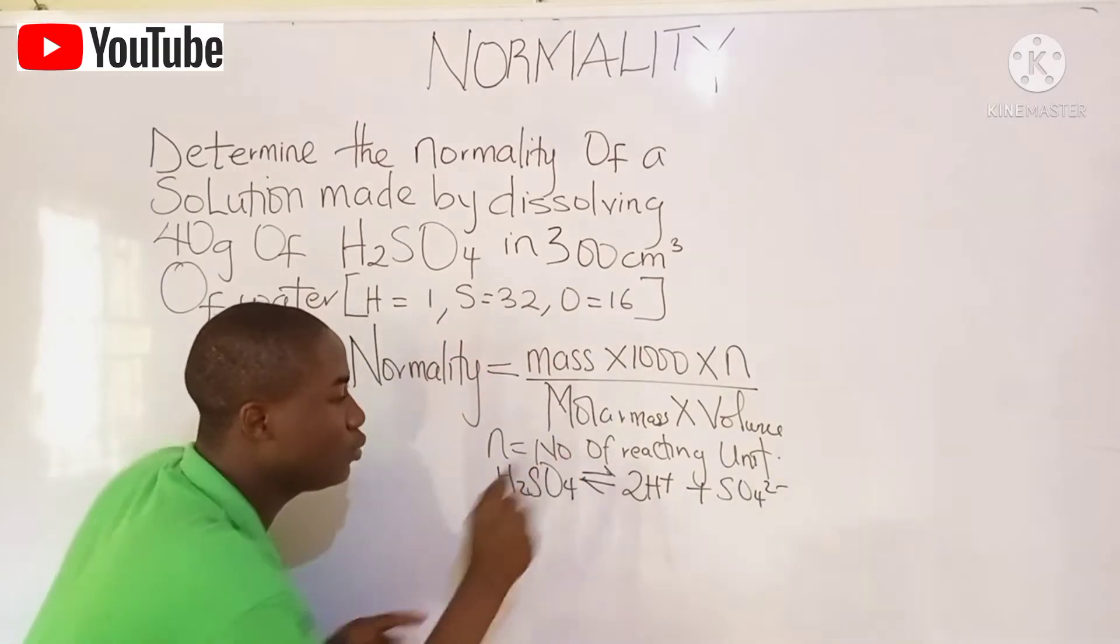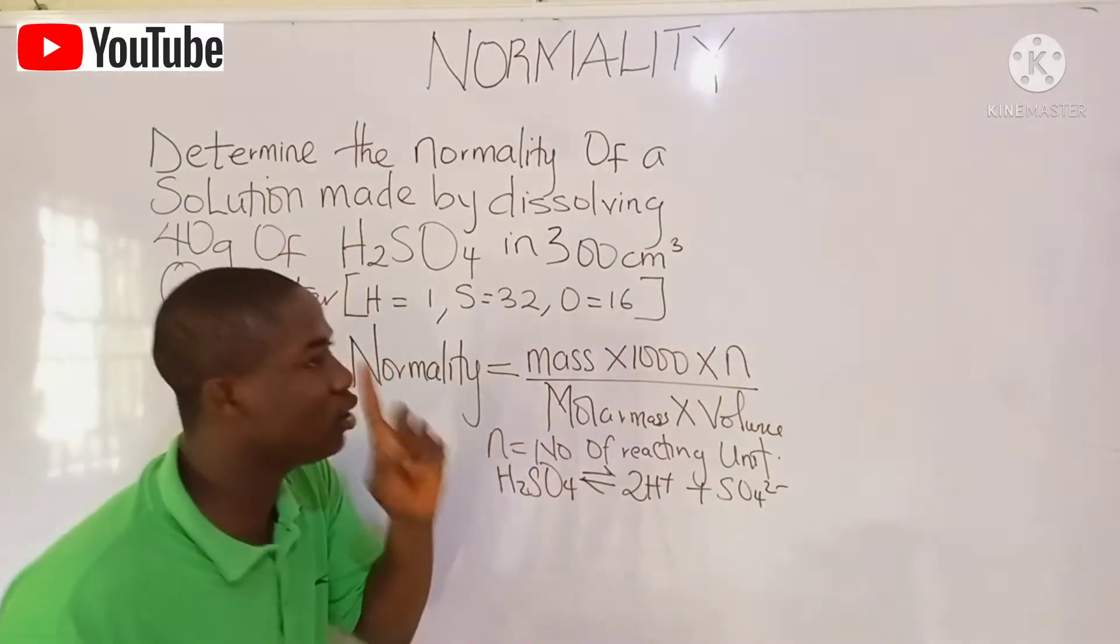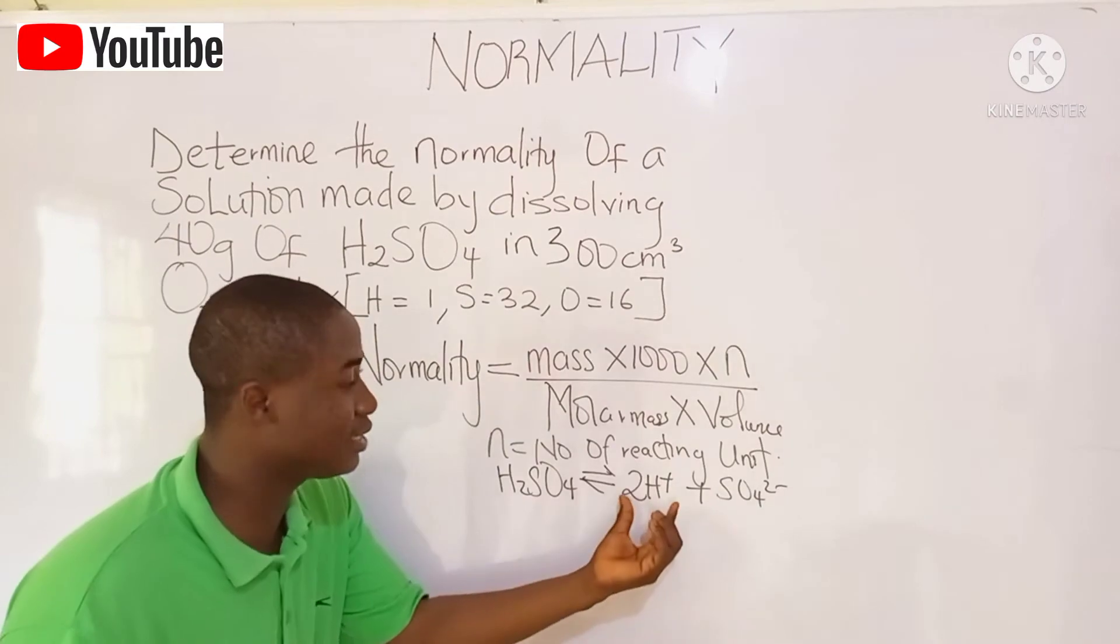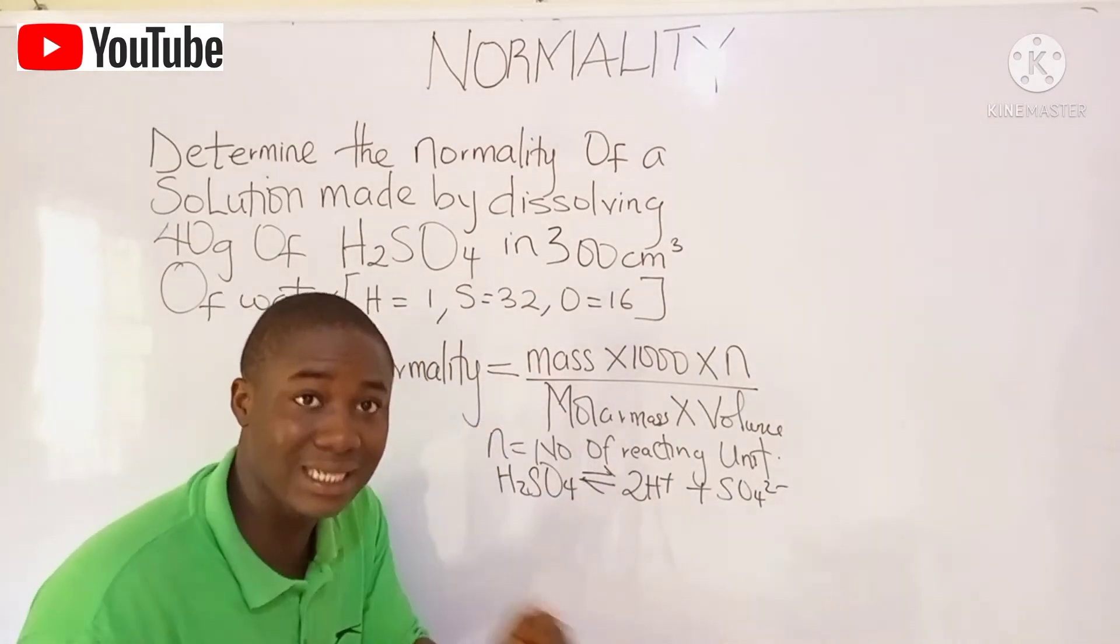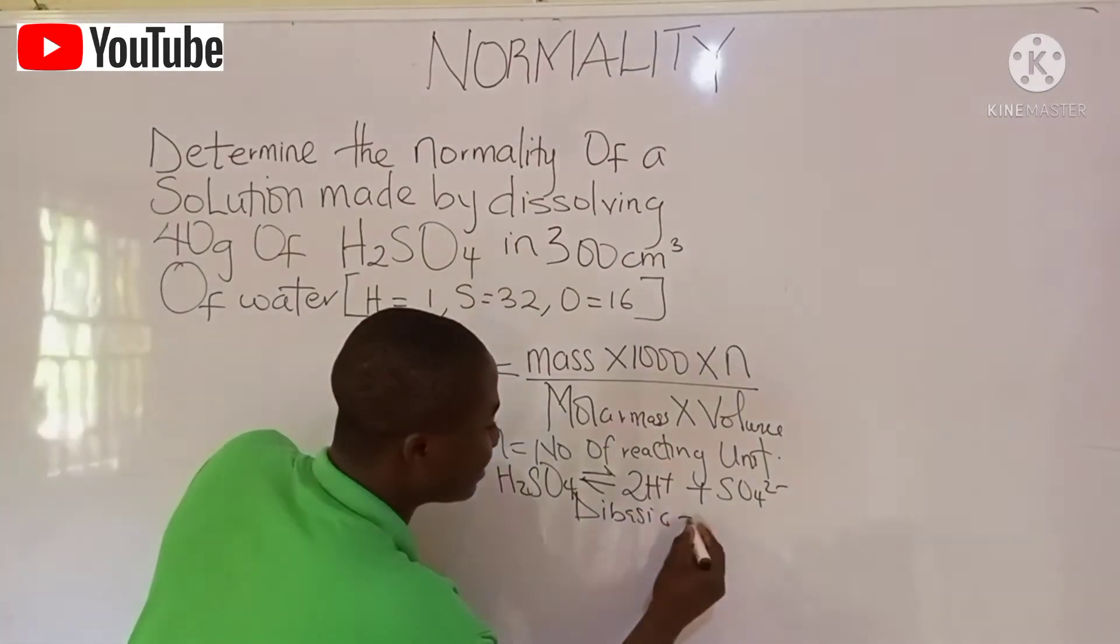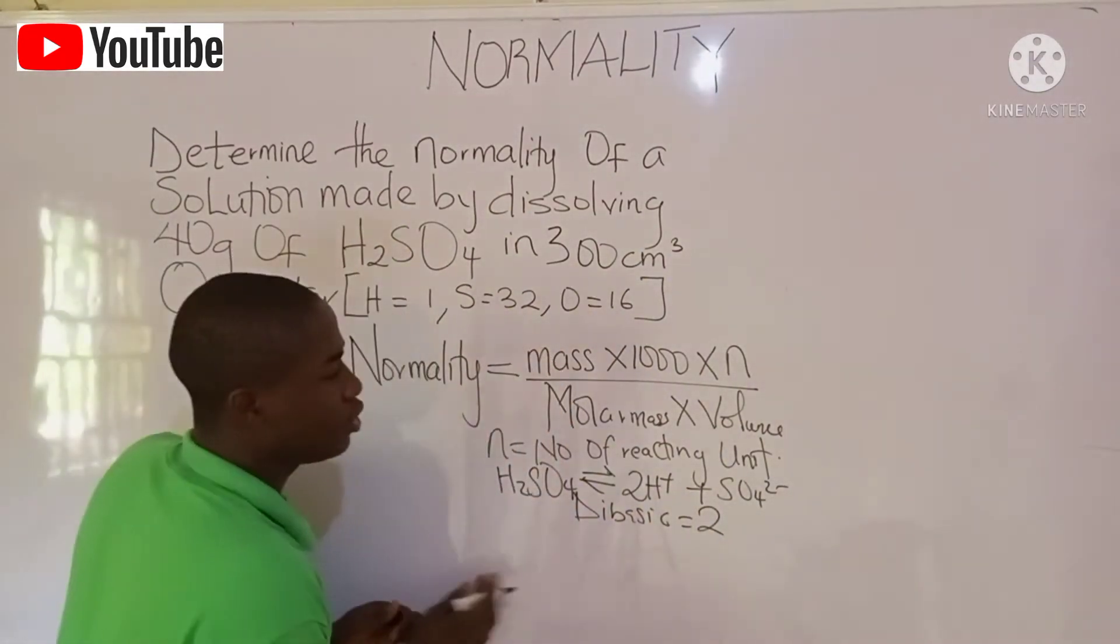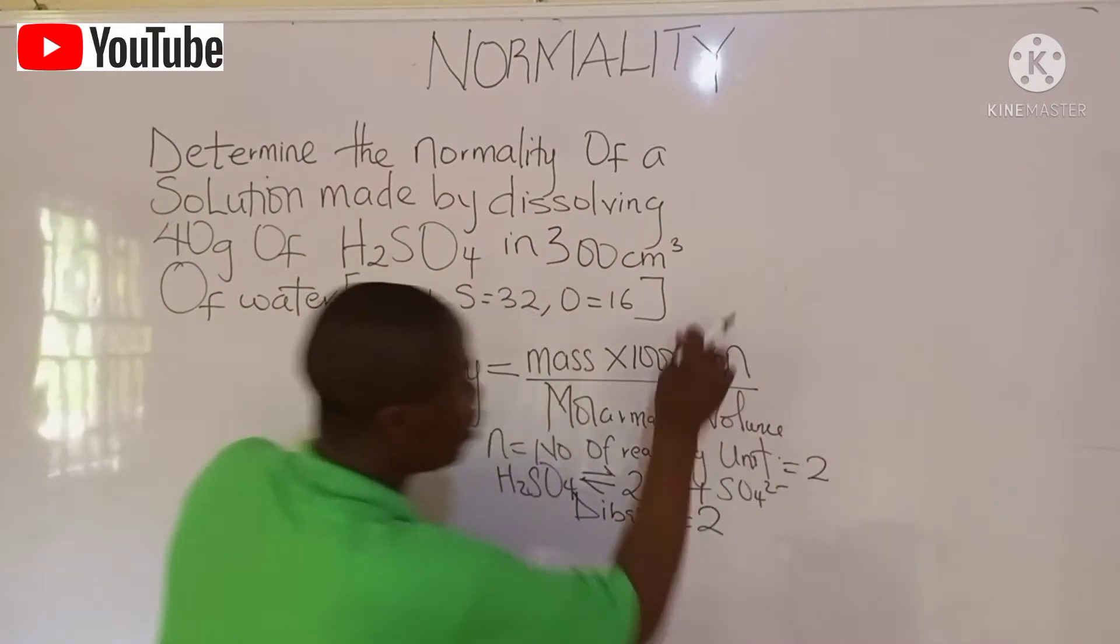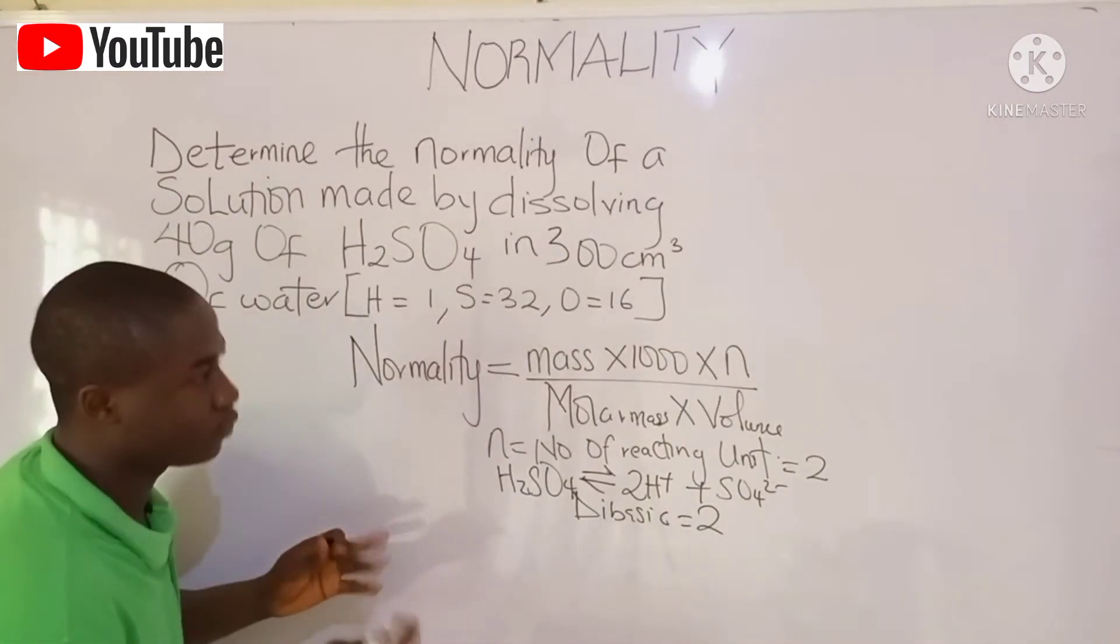What would be the number of reacting units? I said number of reacting units is the same as basicity of an acid. And the number of reacting units in this case would be 2, because this acid is dibasic, possessing 2 hydrogen ions. So the number of reacting units become 2 in this particular question.